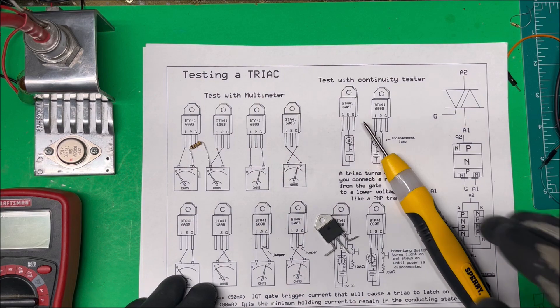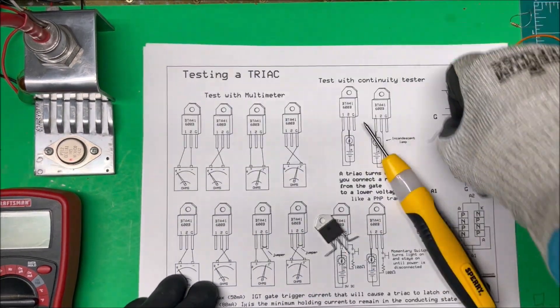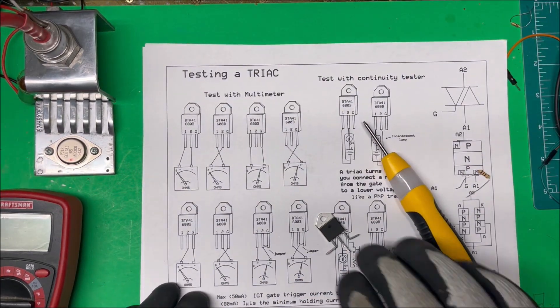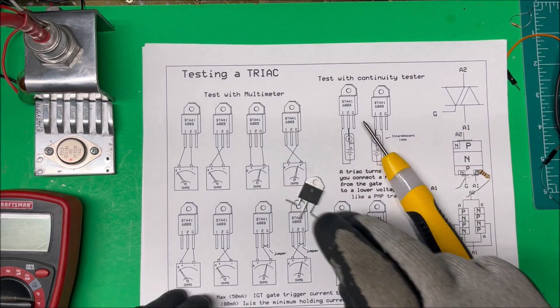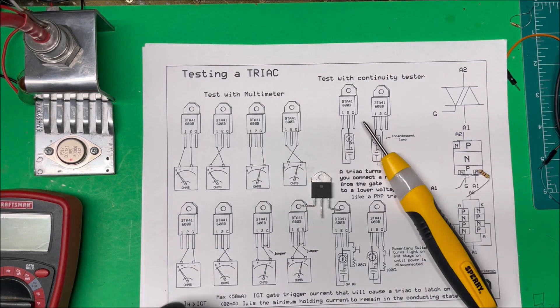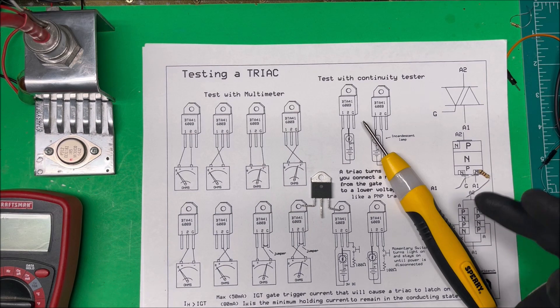On these TRIACs, if you look in the datasheet, this one has an IGT—that's a gate trigger current that will cause the TRIAC to latch on. This one has a max of 50, but I'm going to put 30 in there.